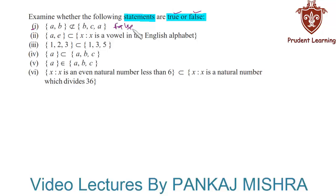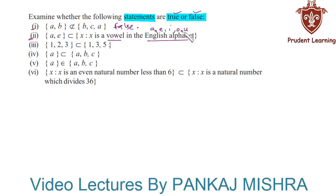In the second section, the first set consists of elements a and e, whereas the second set is given in set builder form: x is such that x is a vowel in the English alphabet. The English alphabet has five vowels — a, e, i, o, and u — and both elements of the first set are present in the second set. Hence, the first set is a subset of the second set, so this statement is true.